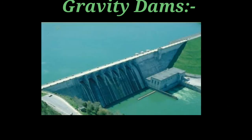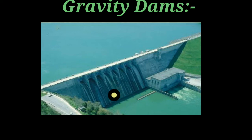In a gravity dam, the flow of water is totally vertical. As you can see in the image, the left side is the reservoir. When the reservoir is full and overflows, the gravity dam releases water vertically downward through the structure.